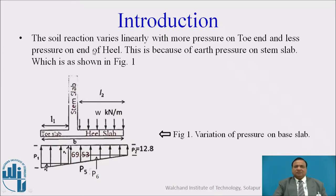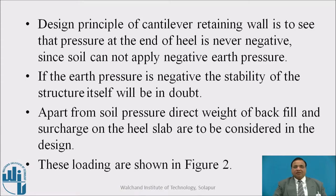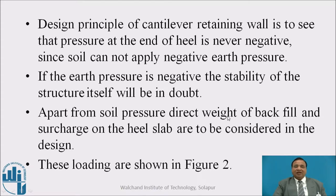The soil reaction varies linearly with more pressure on toe and less pressure on heel. This is because of earth pressure on the stem slab as shown in figure 1, where we find P/A + M/Z and P/A - M/Z, where M is created by the lateral pressure acting on the stem slab of a retaining wall. The design principle of a cantilever retaining wall is to ensure that the pressure at the end of the heel is never negative, since soil cannot apply negative pressure. If the earth pressure is negative, the stability of the structure itself will be in doubt. Apart from soil pressure, the direct weight of the backfill and the surcharge on the heel slab are to be considered in the design.